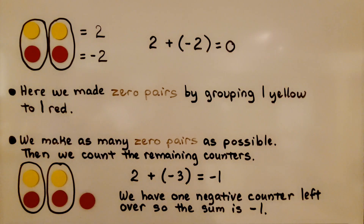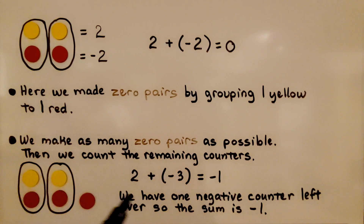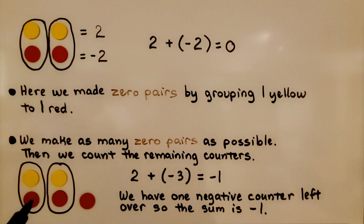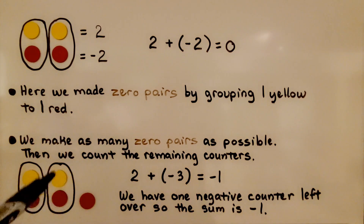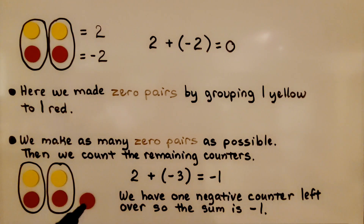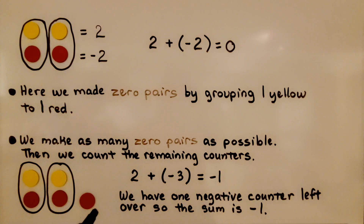Here we have two positive and three negative. We make zero pairs — one zero pair, two zero pairs — and we have one negative left over. We have one negative counter left over, so the sum is negative one.